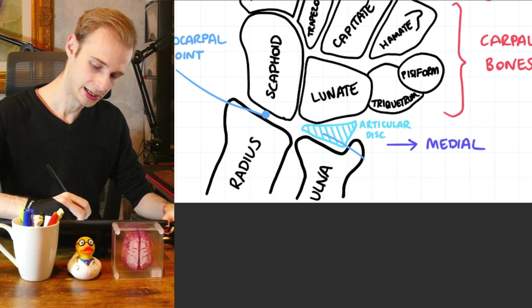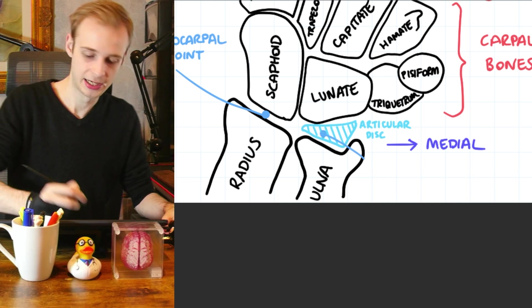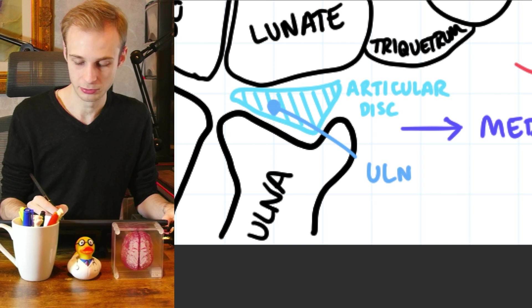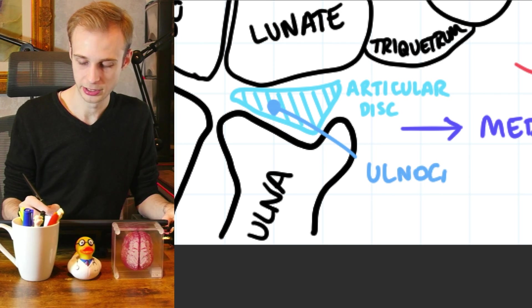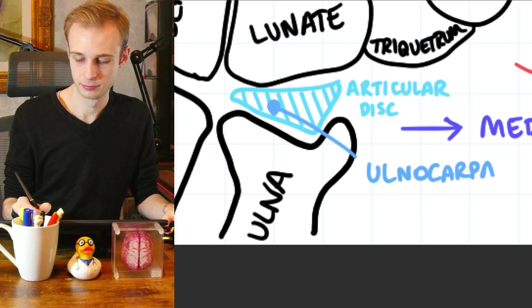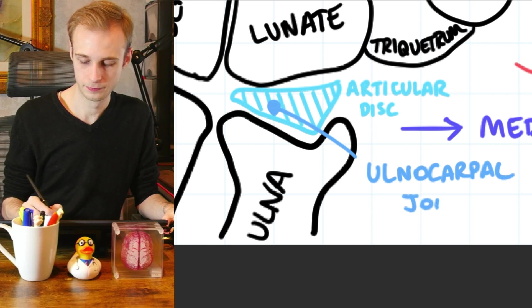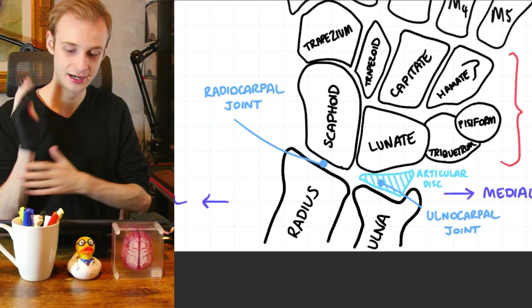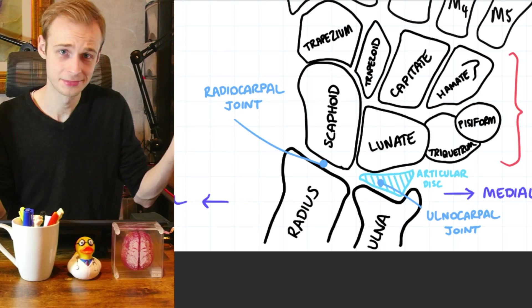Similar on this side. This side here, which is formed by the articular disc, I'm sure you will have been able to guess, is the ulnocarpal joint. Where the ulnar bone on the ulnar aspect of the arm meets the carpal bones. Simple.